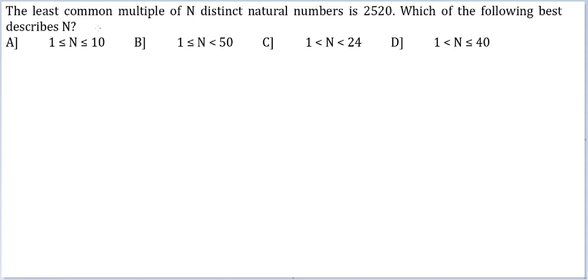If LCM of n distinct natural numbers is 2520, can I say these n distinct natural numbers are also factors of 2520? Only then will 2520 be a multiple of them. So effectively what this question asks of me is what are the total number of factors of 2520? Because that is the maximum possible number of n that you can get.